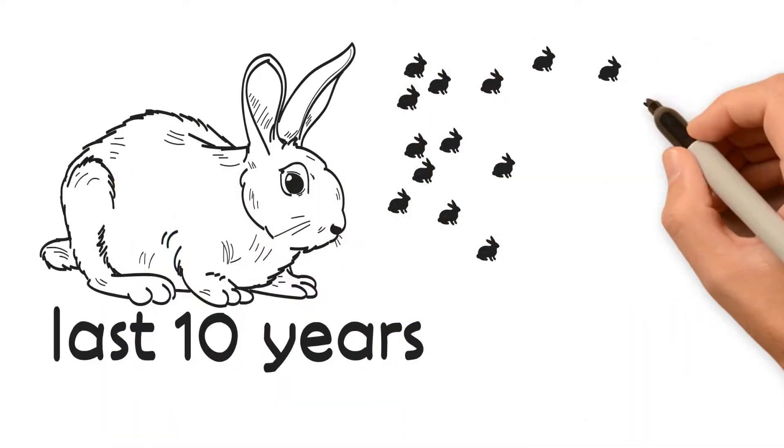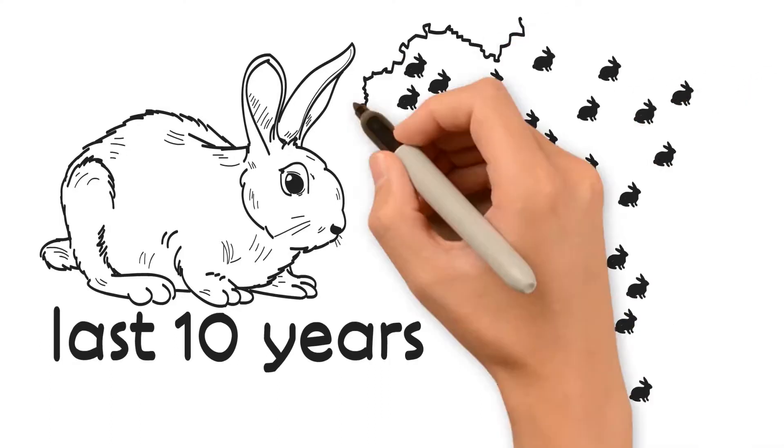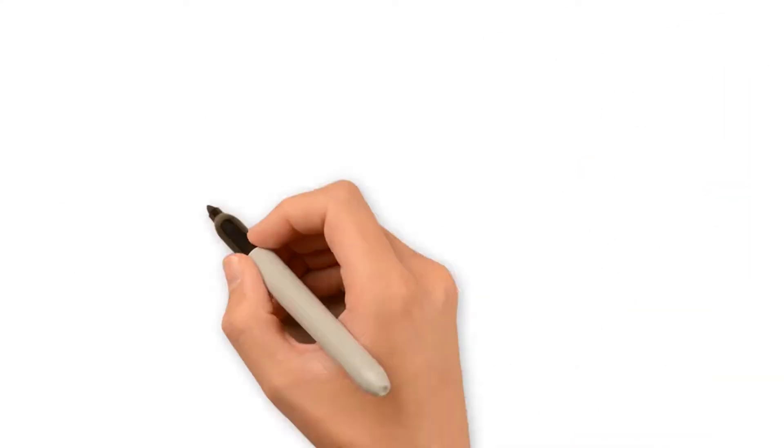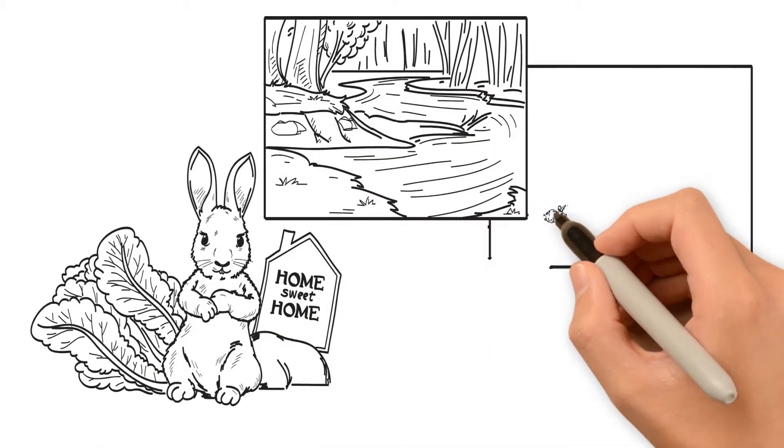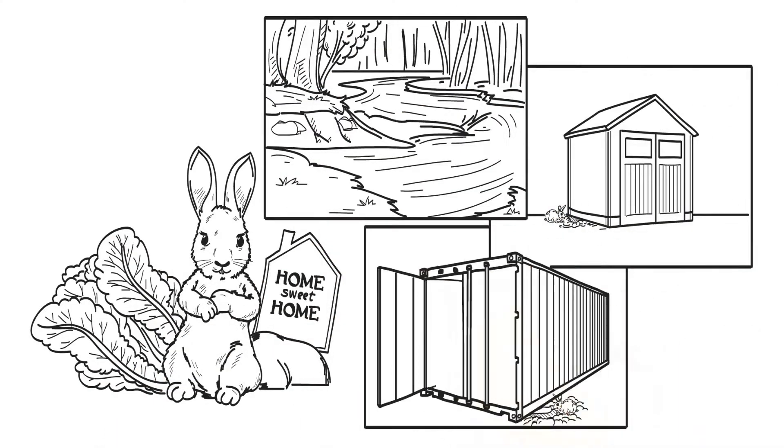Rabbits have been invading and establishing themselves within the Lockyer Valley over the last 10 years. They make their homes, known as warrens, in creek banks, under sheds and shipping containers and elsewhere.